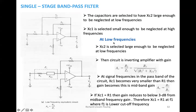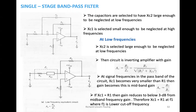At low frequency, Xc2 is selected to be large and cannot be neglected. The gain is R2 divided by Z1, where Z1 is a combination of R1 and Xc1. The feedback, which is very important here, becomes R2 divided by Z1. Please note this down — Z1 is a combination of R1 and Xc1. You could be asked problems regarding this formula.